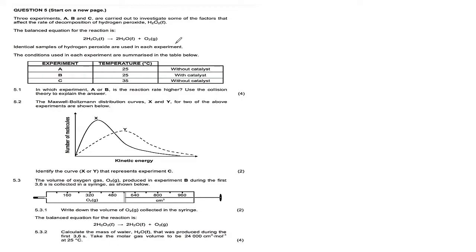Question 5 says three experiments A, B, and C are carried out to investigate some of the factors that affect the rate of decomposition of hydrogen peroxide H₂O₂. Identical samples of hydrogen peroxide are used in each experiment — that means the same mass. Experiment A was done at 25°C without a catalyst, experiment B at 25°C with a catalyst, and experiment C at 35°C without a catalyst.